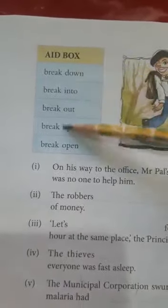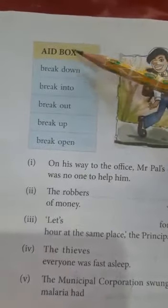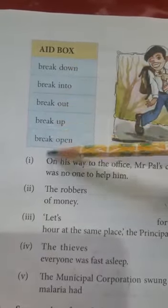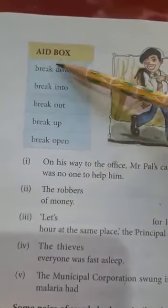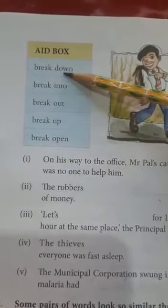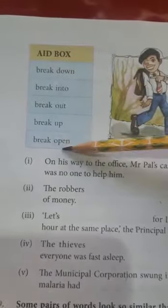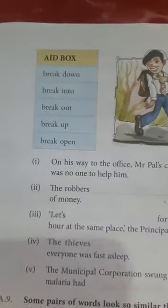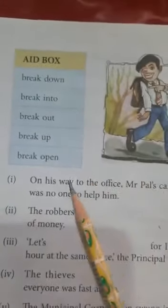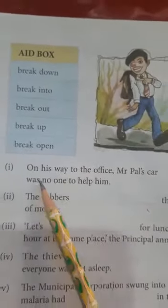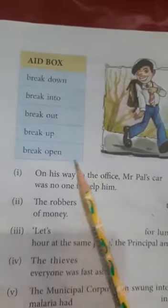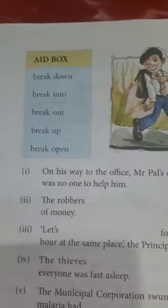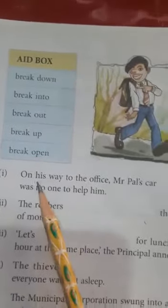In question A8, a box is given with eight options. The word 'break' is used in many ways — the word is the same but prepositions are added after it, so the meaning changes completely. We have to make use of the given phrasal prepositions according to the sentences.